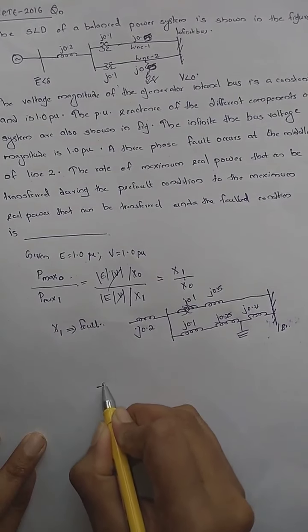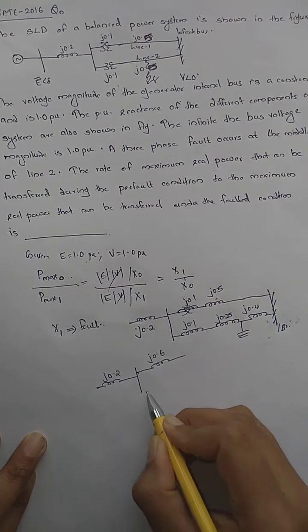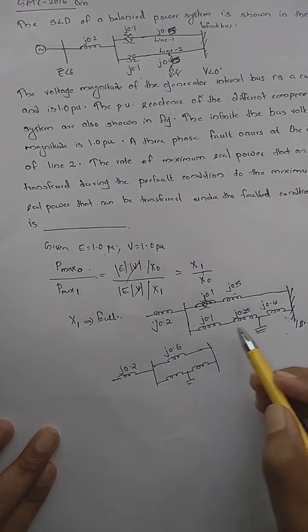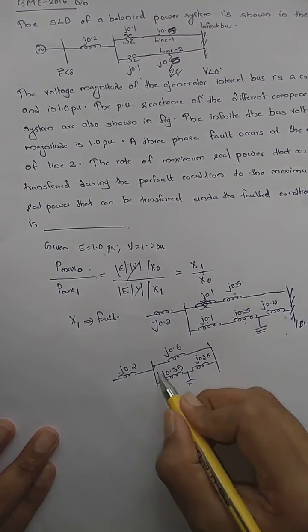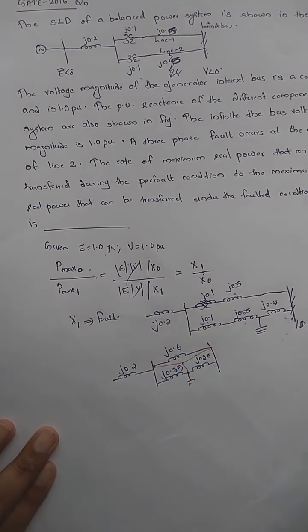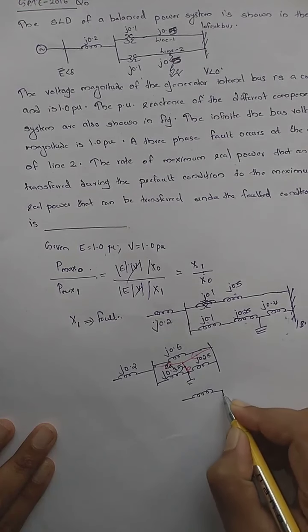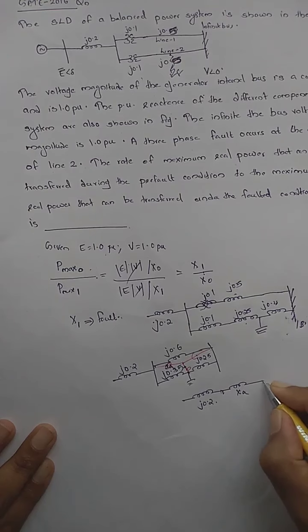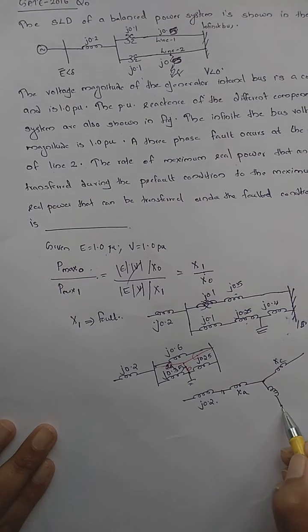Redrawing the circuit: J0.2 for the generator, and J0.1 plus J0.5 gives J0.6 on one branch. There are now three reactances connected in delta — J0.6, J0.35 (which is J0.1 plus J0.25), and J0.25. We need to convert this delta connection to a star connection. The three nodes are labeled A, B, and C.